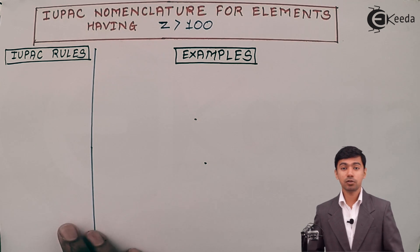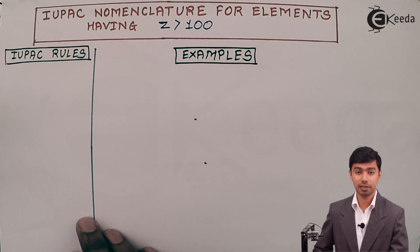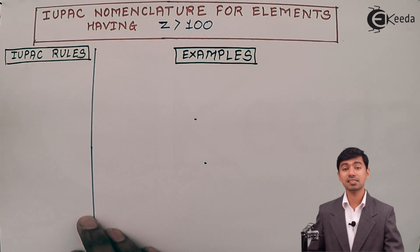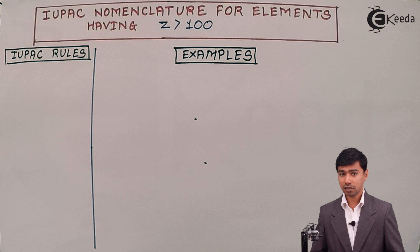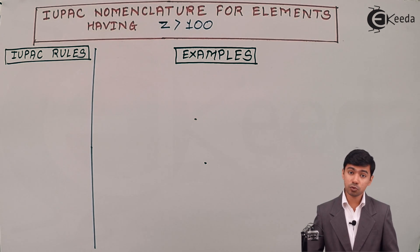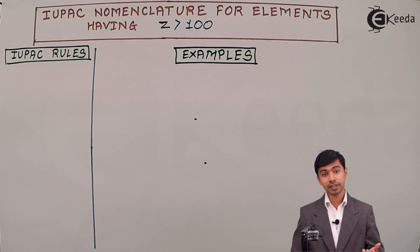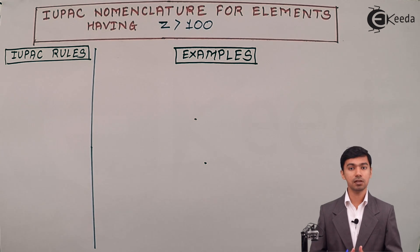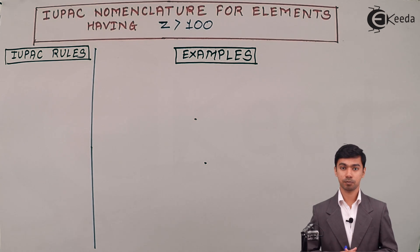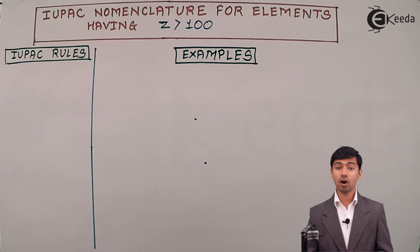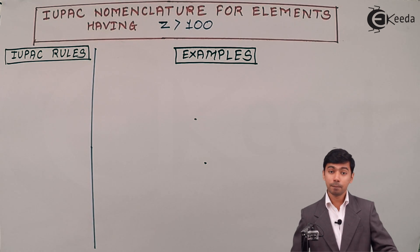We are going to see about the IUPAC nomenclature of higher atomic number elements. These are all man-made elements synthesized in a laboratory. Whenever an element is discovered or synthesized, the contribution is not done by a single person — it is done by many people from different countries. So there is a conflict about what the name for that synthesized element should be.